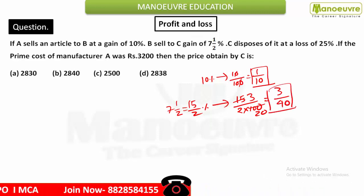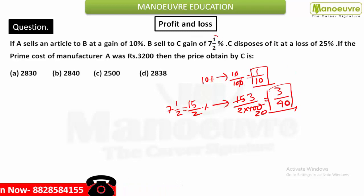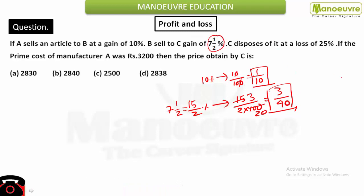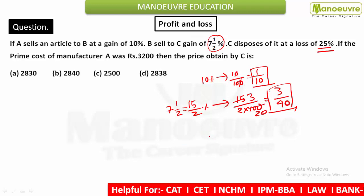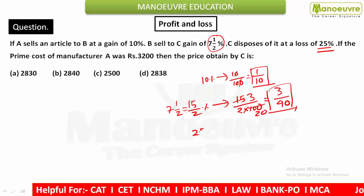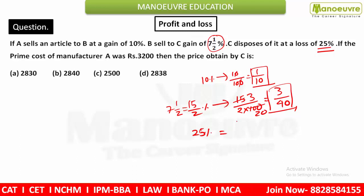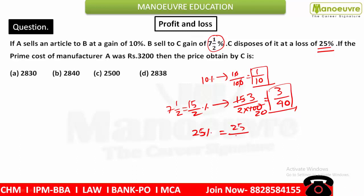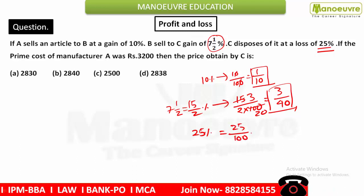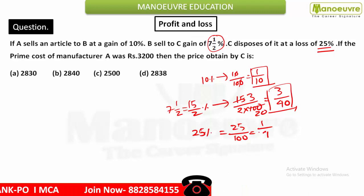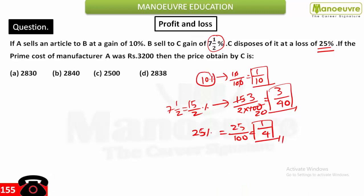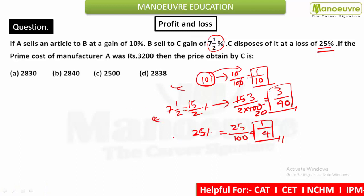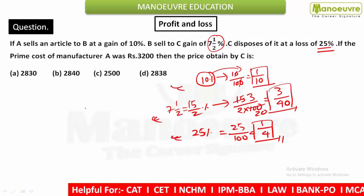So 3/40 is the fraction form of 7½%. Now for 25%: 25/100 reduces to 1/4. So 25% = 1/4 in fraction form. These are all our percentage-to-fraction conversions. Hope this is clear so far.